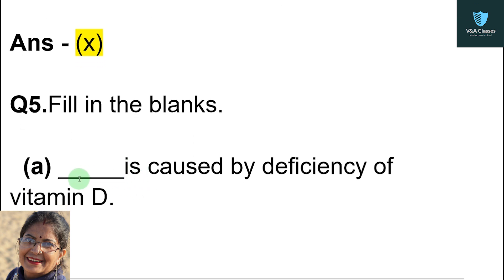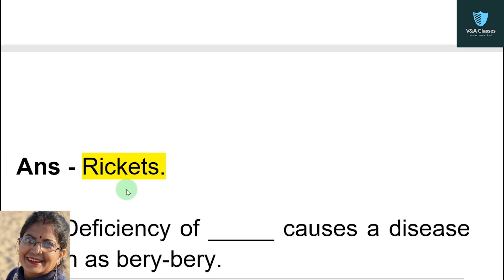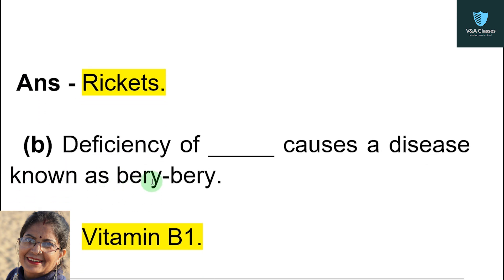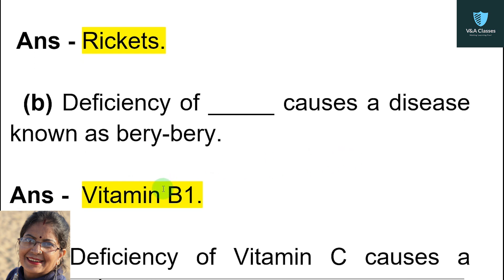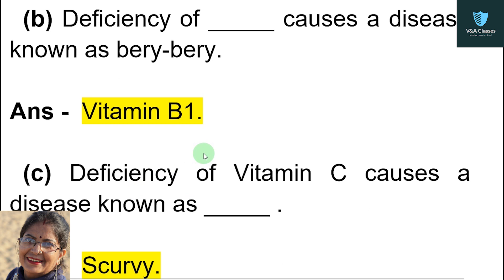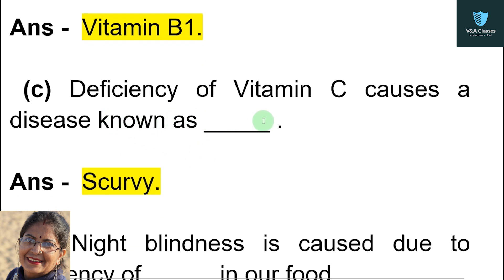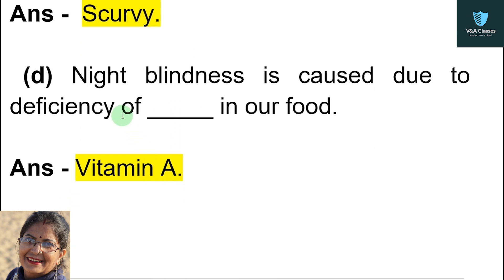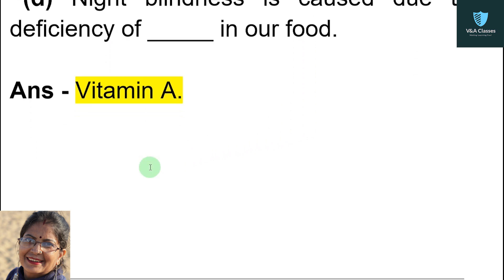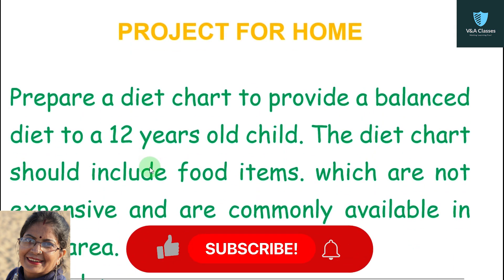Question number five: fill in the blanks. First — dash is caused by deficiency of vitamin D. Answer: rickets. Next — deficiency of dash causes a disease known as beriberi. Answer: vitamin B1. Next — deficiency of vitamin C causes a disease known as dash. Answer: scurvy. Next — night blindness is caused due to deficiency of dash in our food. Answer: vitamin A.